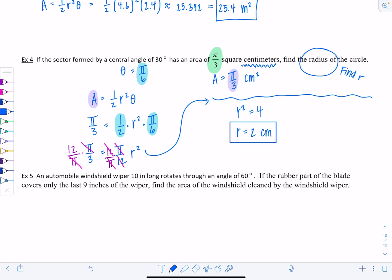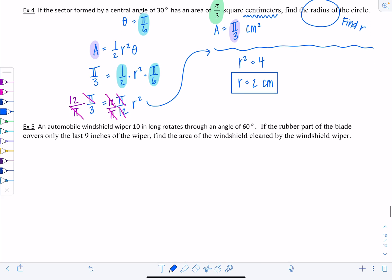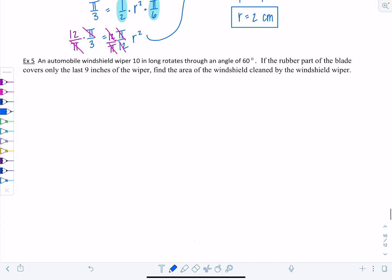Very good. One last example. An automobile windshield wiper 10 inches long rotates through an angle of 60 degrees. If the rubber part of the blade covers only the last 9 inches of the wiper, find the area of the windshield that's cleaned by the windshield wiper. Here's what's going on. We've got this windshield wiper, and it rotates through an angle of 60 degrees. This is 60 degree angle right here. Right away, I'm going to write that's π over 3 radians because we're working in radians.